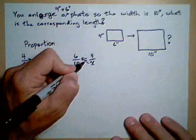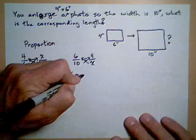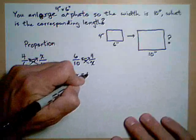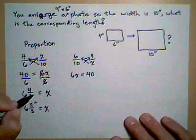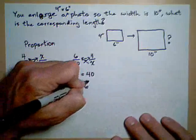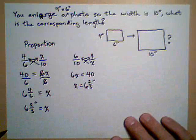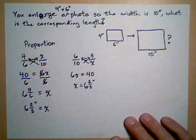Again, we can cross-multiply, and we get 6 times x on the left-hand side equals 4 times 10, which is 40, and we know from solving this before that x is going to be equal to 6 and 2 thirds inches. So that's two ways of setting up a proportion.